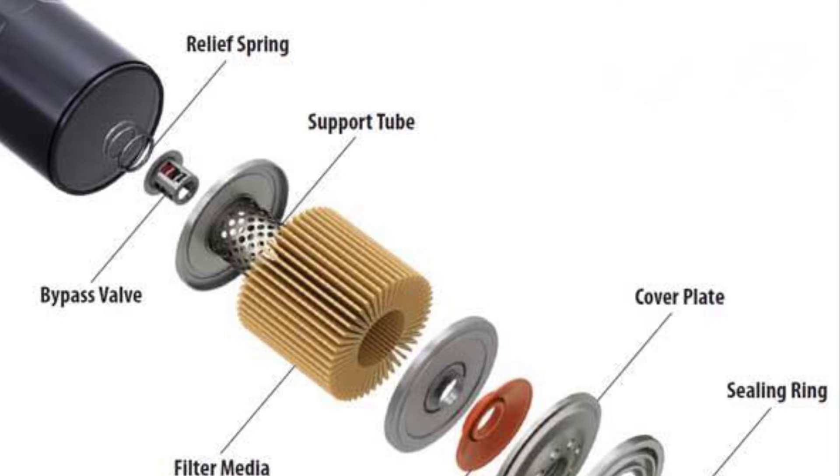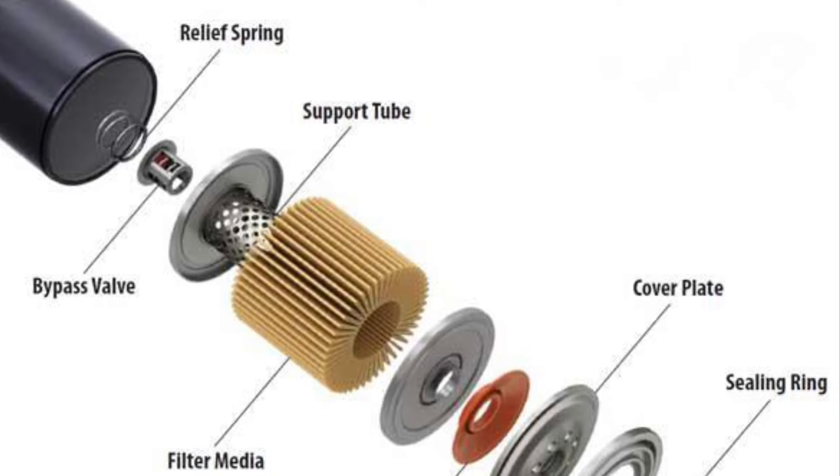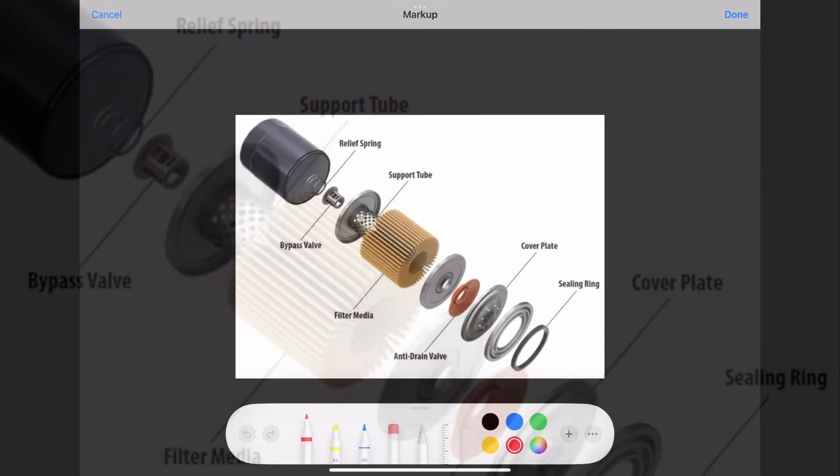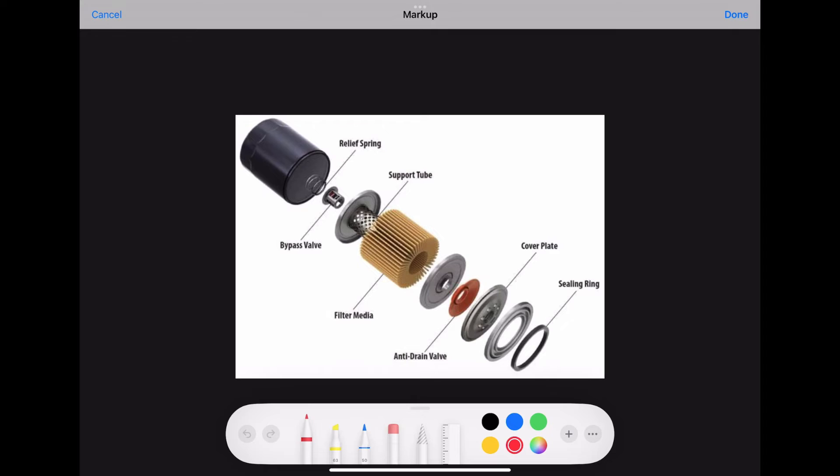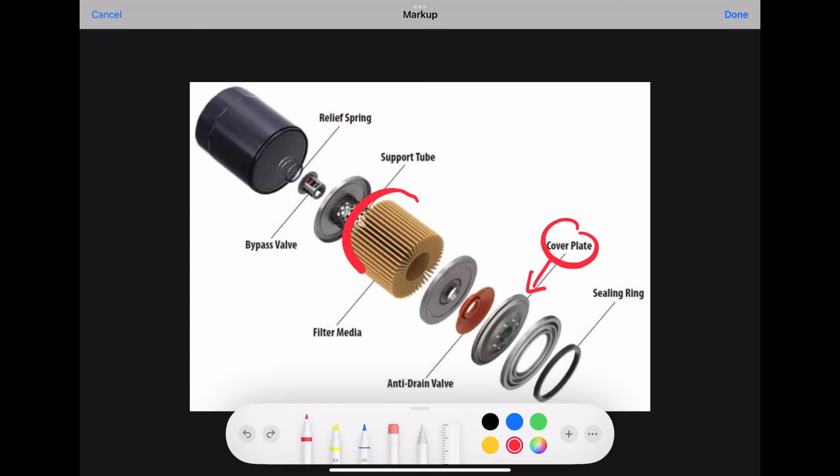Now, not every filter will look identical to this, but this is kind of a general schematic of how the filter will function in case it gets clogged. These are the parts of the filter that we're going to mention: the cover plate, and dirty oil is sent into the filter through these holes on the cover plate. It's then directed through the filter media, which filters out all of the particles and then through the holes of the support tube and then off to the engine for lubrication and cleaning and cooling. And you'll notice at the bottom of the support tube, we have a bypass valve, which is built into the filter.